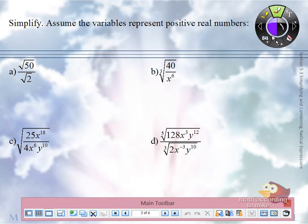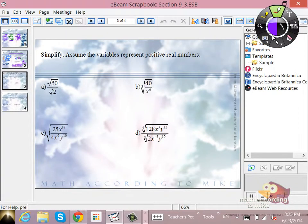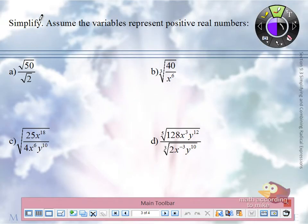The typical behavior, and we're going to see this throughout this section, is that if you are given two radicals as a product or as a quotient, you usually write it back as one radical. If you are given one radical, you usually break it up into two radicals.